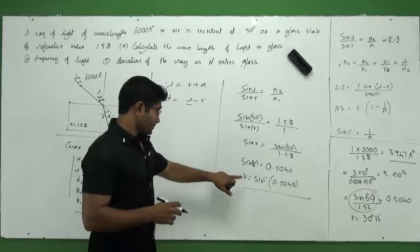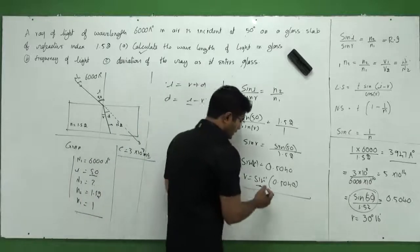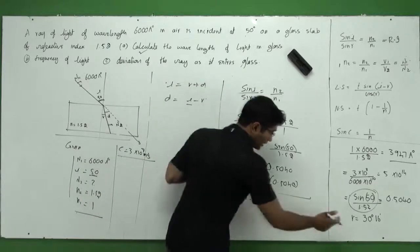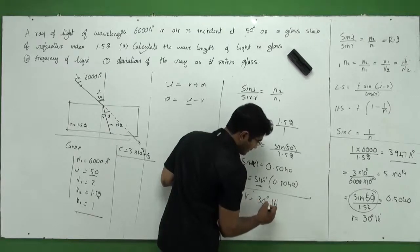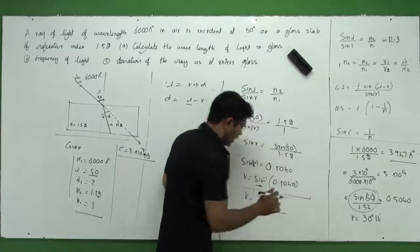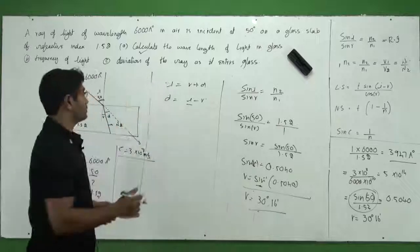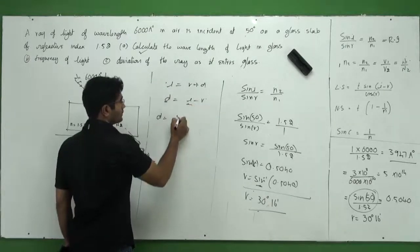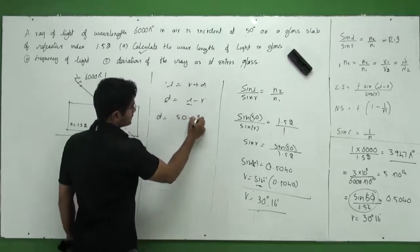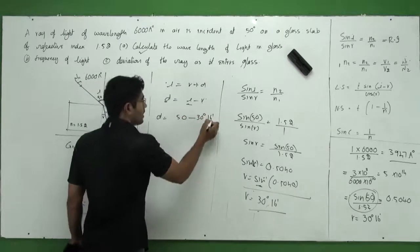Okay, now if I check this in natural science again in log book, I get this value that is 30 degrees and 16 minutes. Okay, this is what I have. Now, how will I find the value d? d is actually i minus r, i is 50, r is now 30 degrees and 16 minutes. Now, how do I subtract 16 minutes from this 50 degrees?